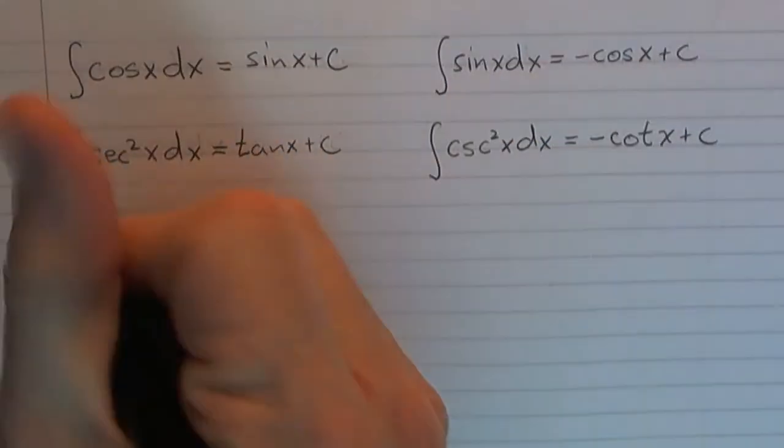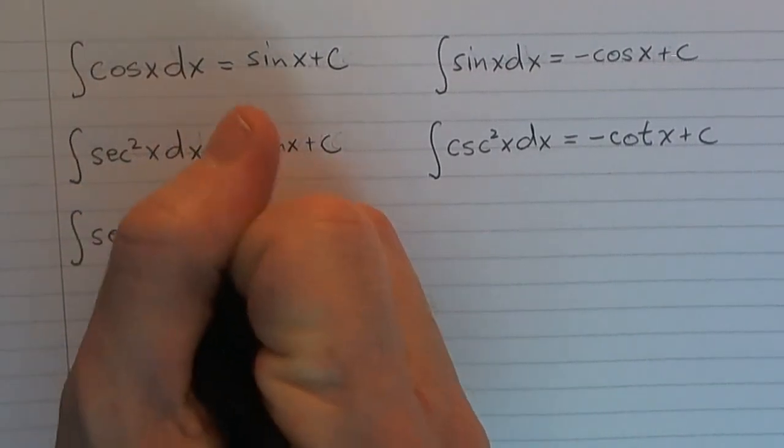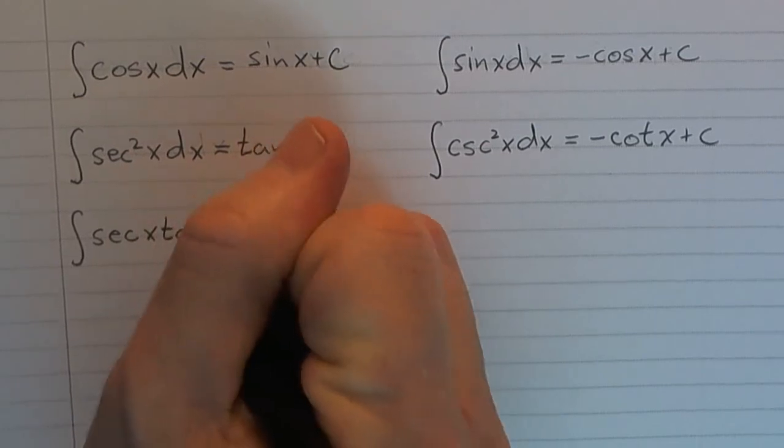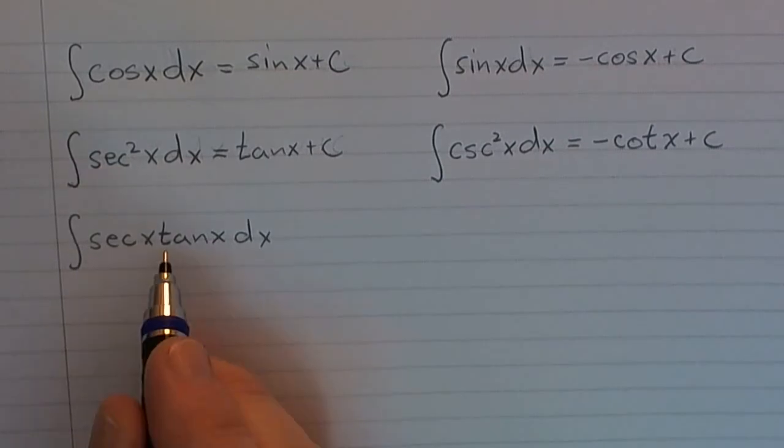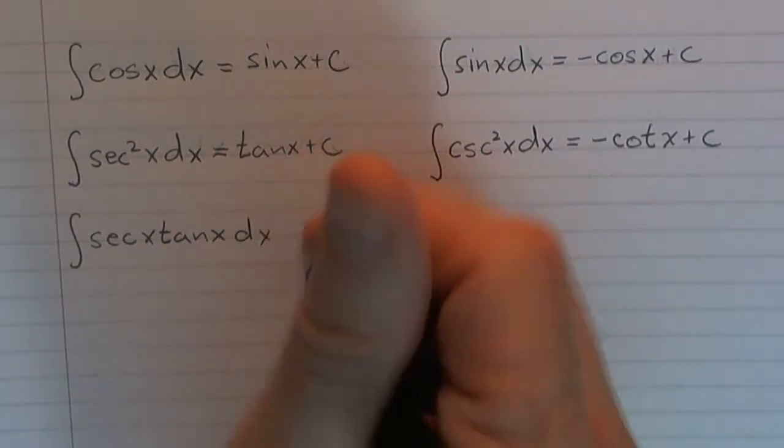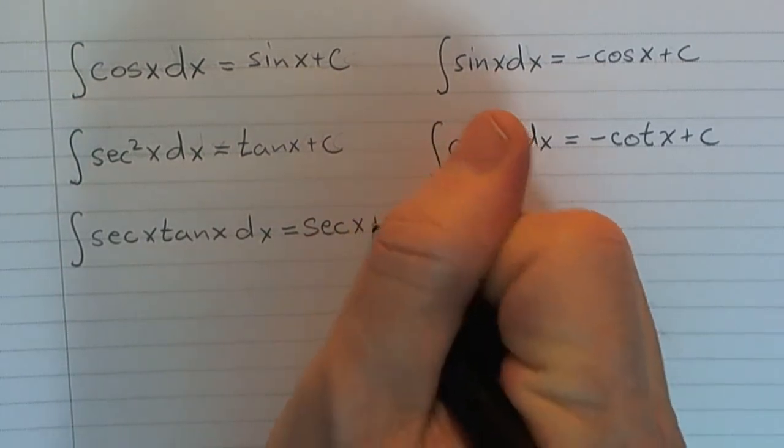Now, let's look at this. Let's suppose we've got secant x tan x. Well, remember, secant x tan x is the derivative of secant x. So this would just be secant x plus C.